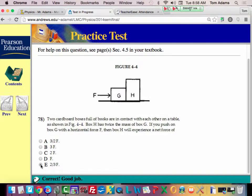Okay, so for problem number 78, you have two boxes, and H is twice the mass of G. If you push box G with a horizontal force of F, then H will experience a net force of something.